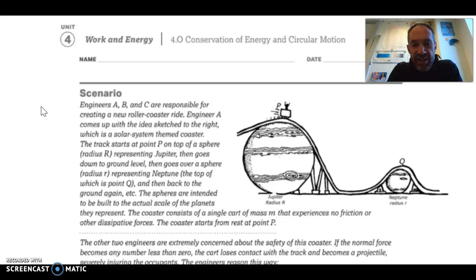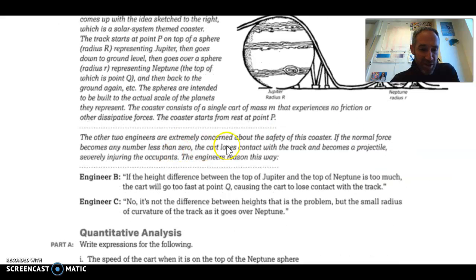Take a look at this other one. So this one is 4.0, and it's a conservation of energy and circular motion. This is right up the College Board's alley. They like to mix different examples together, different concepts together. So we've got some kind of roller coaster that's solar system themed, kind of cool, and they have a Jupiter and a to-scale Neptune underneath these two hills, kind of a neat idea, and there's single cars that are going to be going on this thing, and this car is going to come down and go up to Q.